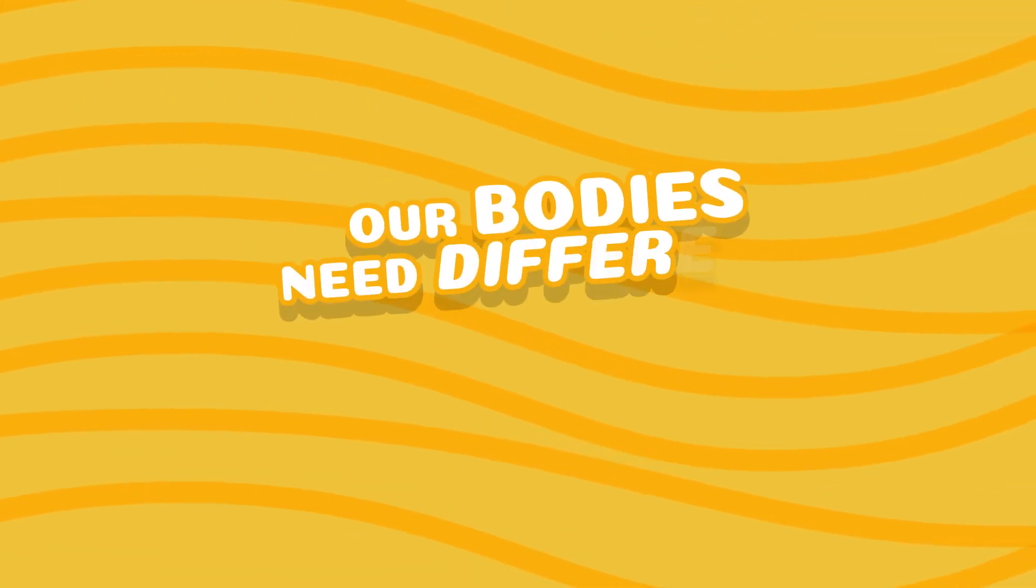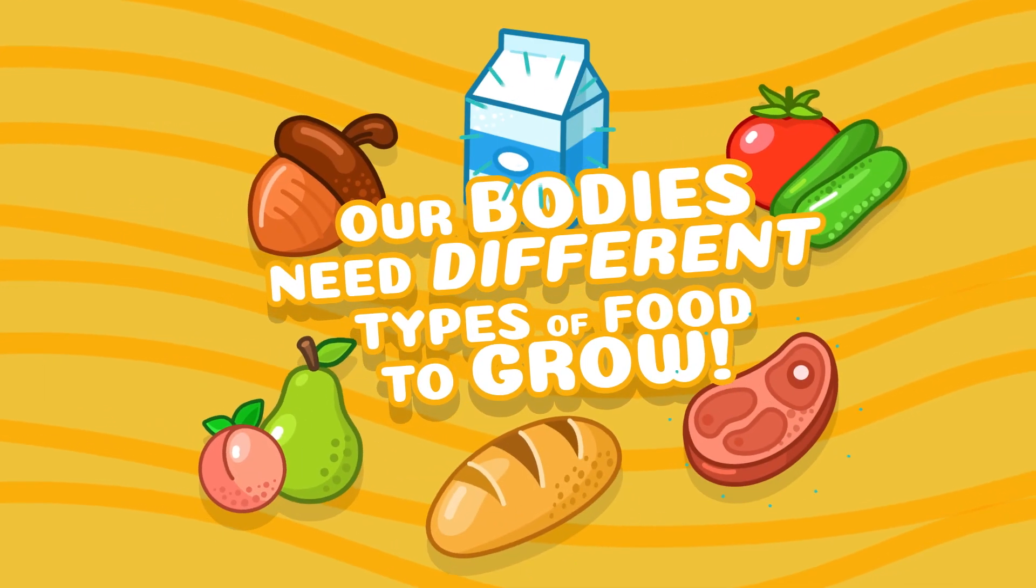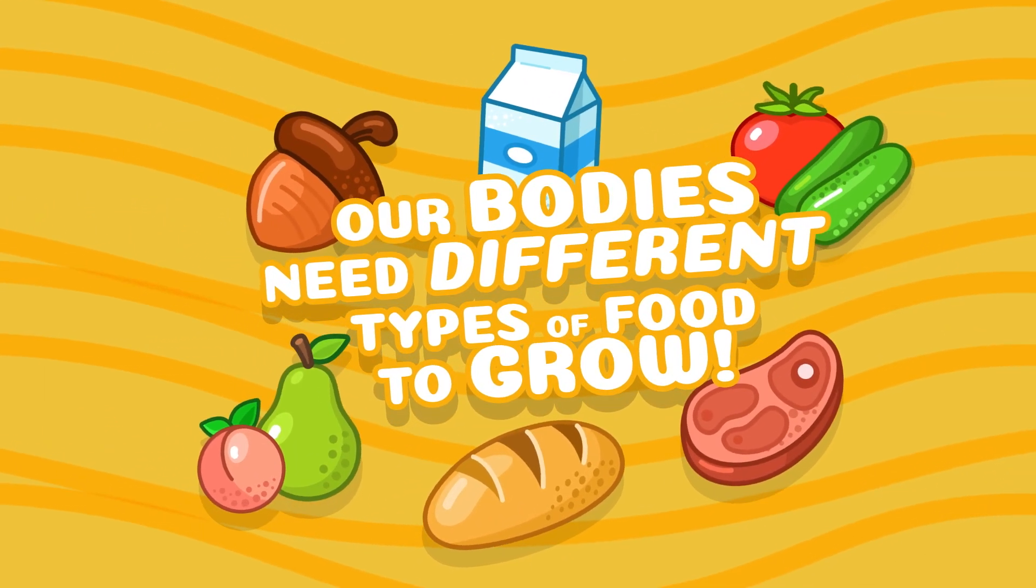Our bodies need different types of food to grow and develop such as vegetables, fruits, nuts, grains, meat, and dairy.